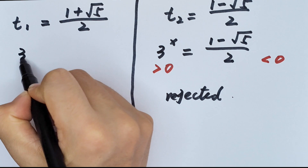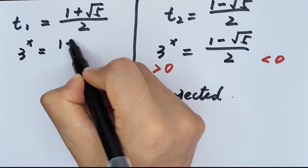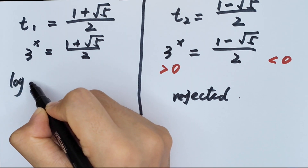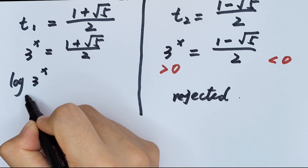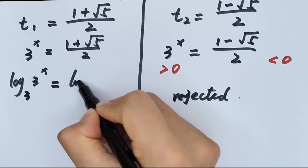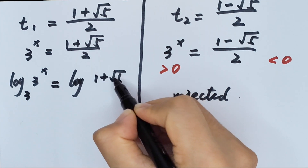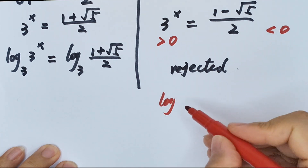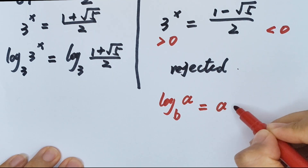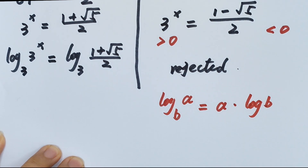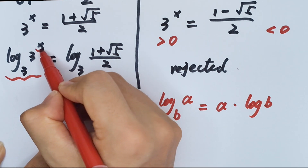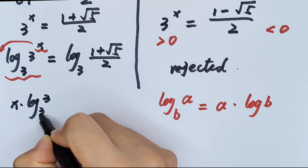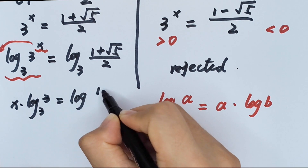So we take 3 to the power of x equals (1 plus square root of 5) / 2. Applying the logarithm: x times log 3 equals log of (1 plus square root of 5) / 2, using the formula log(a^x) = x·log(a).